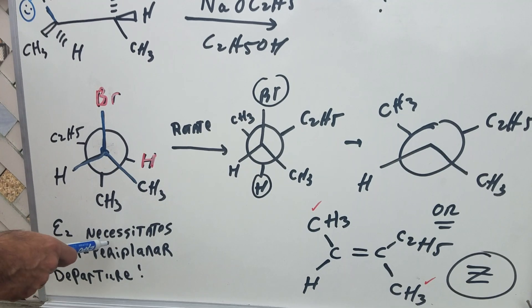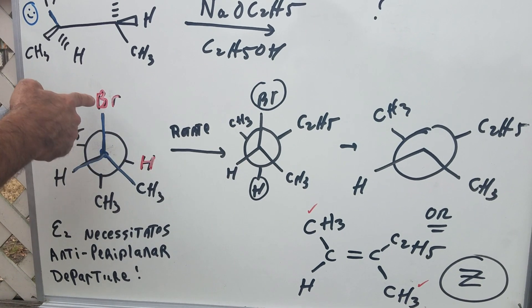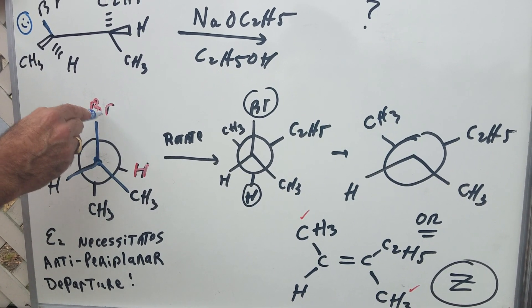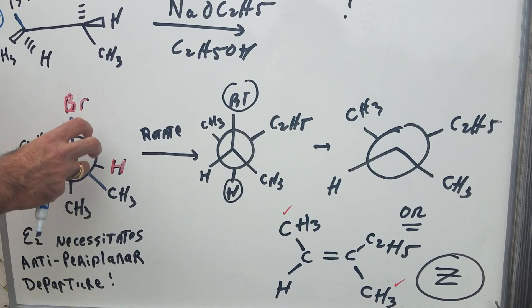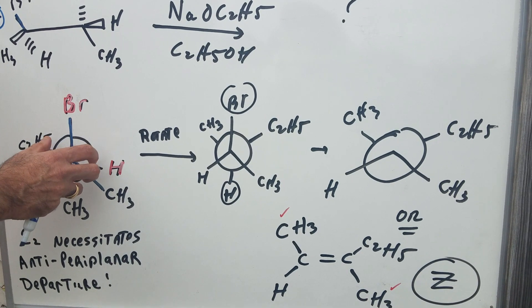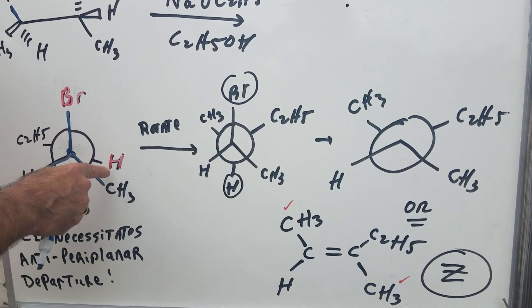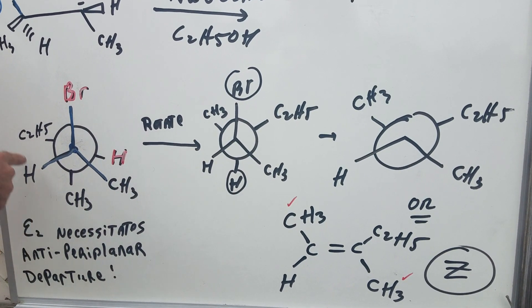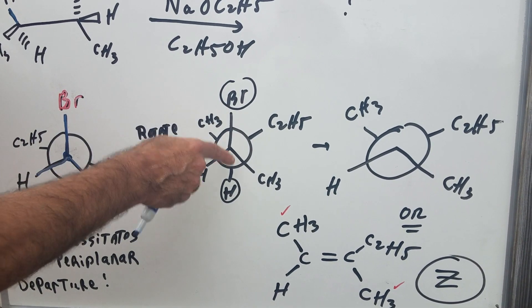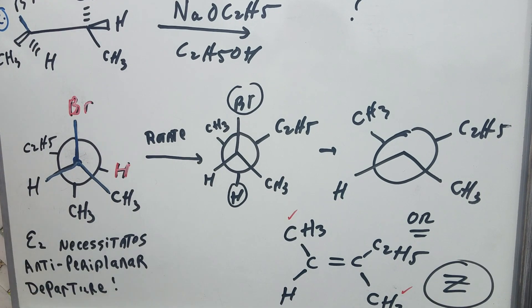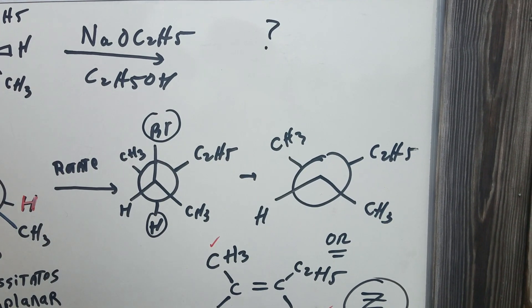The E2 necessitates antiperiplanar departure. That means, and I labeled the two groups that are going to be leaving, the bromine and the hydrogen have got to be anti. In English, it means 180 degrees. So if we rotate the back just a tad bit to get the bromine and the hydrogen anti, that would mean the H would go here, the methyl would go here, and the ethyl would go here. Just by a little rotation. And now we're in perfect shape to be able to see this. If this leaves and this leaves, let them leave and you would get this. And that's obvious.